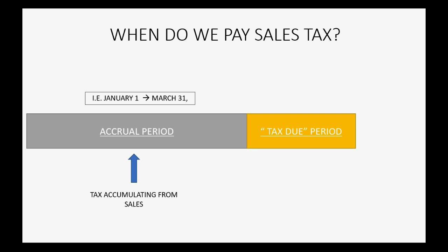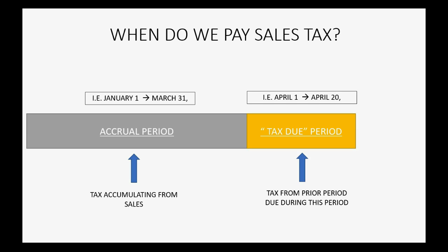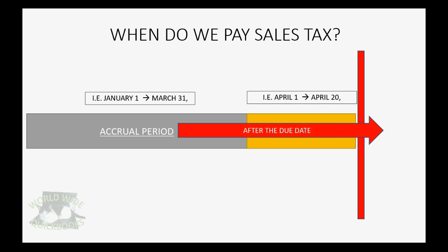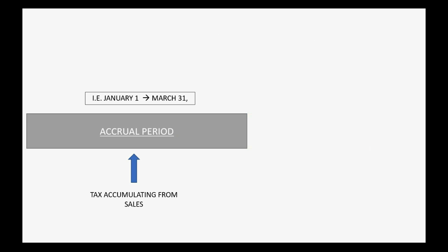After the accrual period is over, you enter the period called tax due — the time period when the prior period's tax is payable to the government. In this example, that would be from April 1 to April 20, so all the sales tax accumulated from January through March must be sent to the government within 20 days of the end of the sales tax period. If you pay after that time period, the sales tax is designated as overdue in QuickBooks Online.